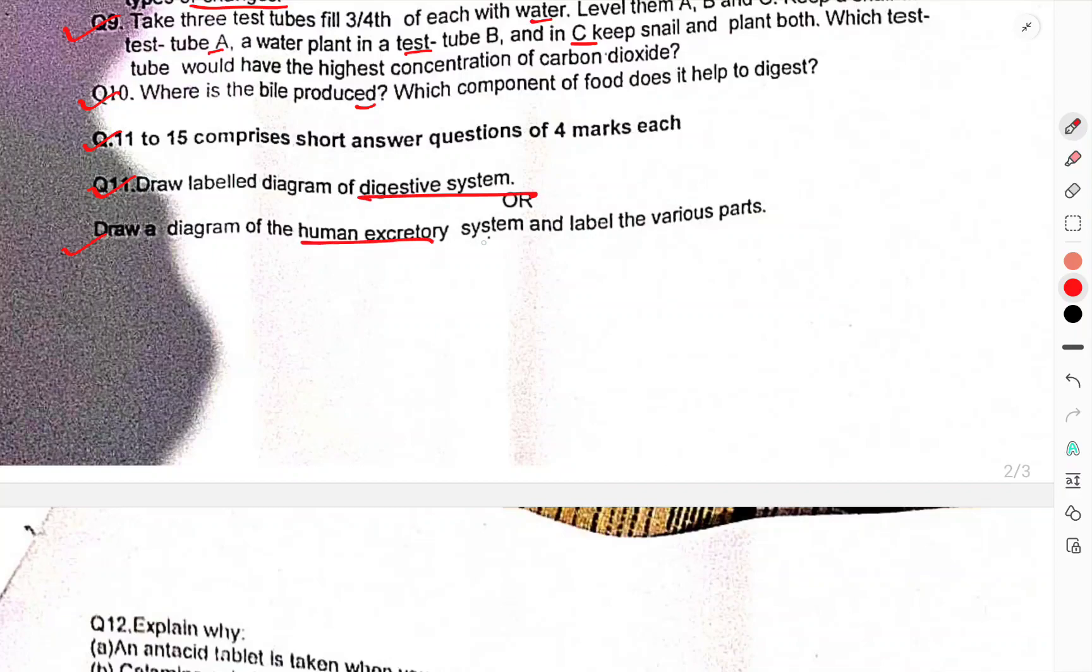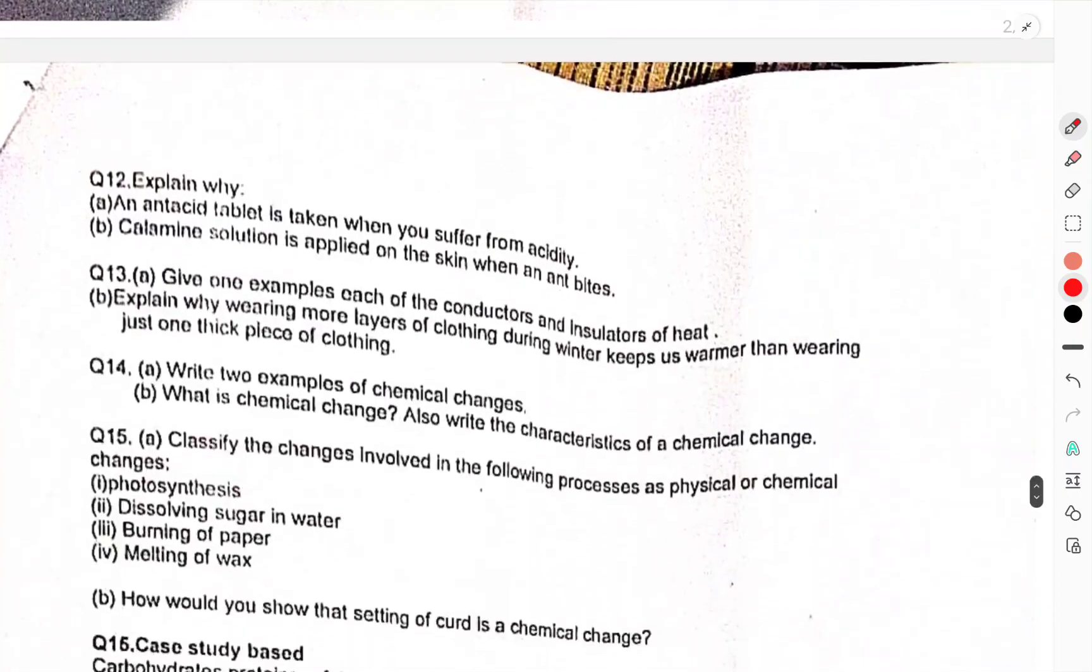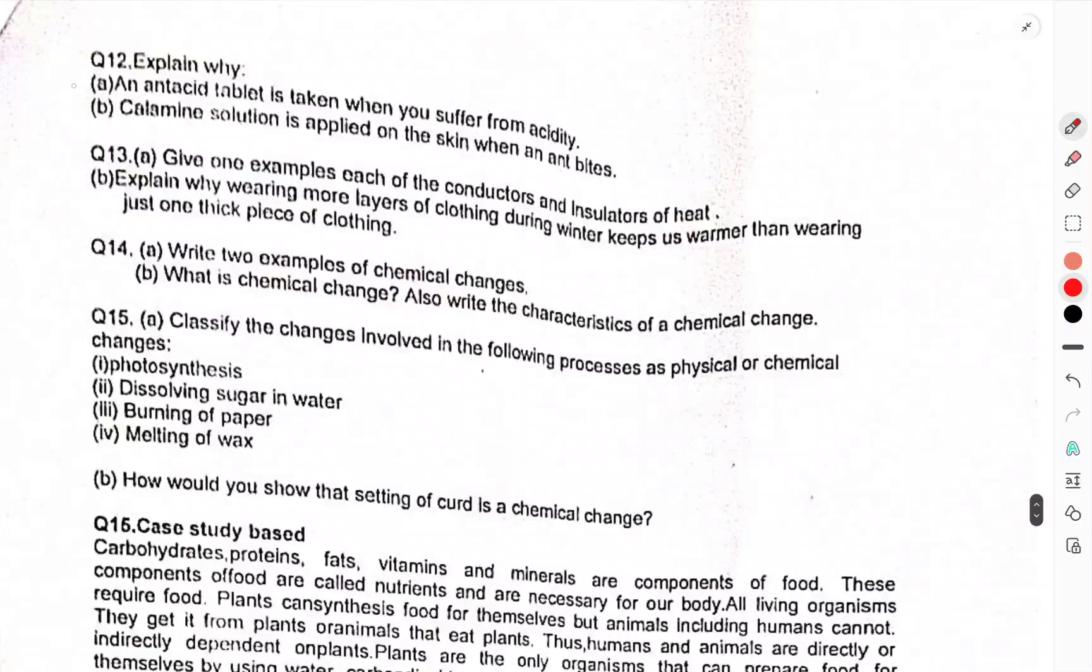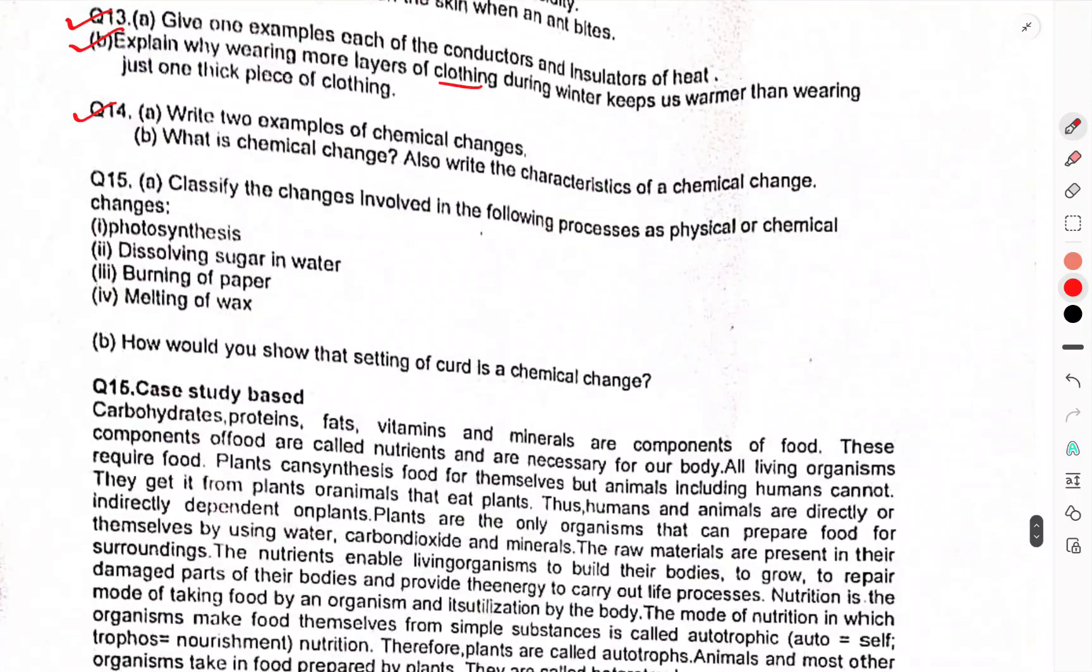Questions 11 to 15 comprise short answer questions of 4 marks each. Question 11: Draw a labeled diagram of the digestive system. Question 12: Draw a diagram of the human excretory system and label the various parts. Question 13: Explain why an antacid tablet is taken when you suffer from acidity. Why is calamine solution applied to the skin when an ant bites? Give one example each of conductors and insulators of heat.